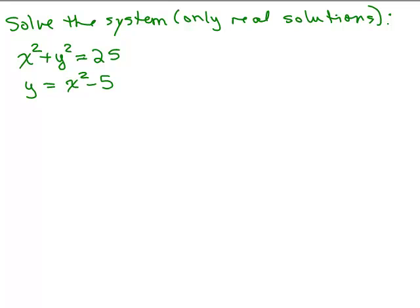So we could use the graphing method and if you use the graphing method, notice we have a circle and a parabola. So that's one way of doing it. It's not always obvious where they intersect so I'm going to go ahead and go with substitution or elimination.